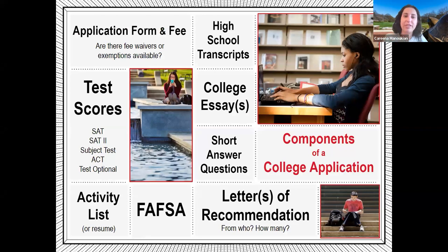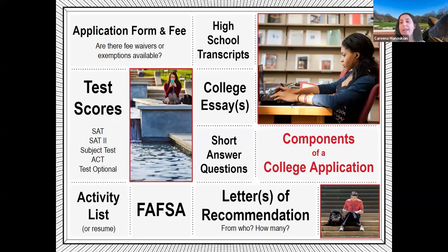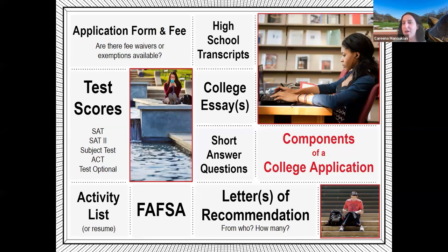When applying to a university, every application will ask for certain things in addition to the application itself. First, there's the application form, and typically there are fees associated with it. Some schools, like the University of Maryland, already have fee waivers built into the application. There are also fee waivers for first-generation students and low-income students, and some schools offer fee waivers if you attend their specific events.